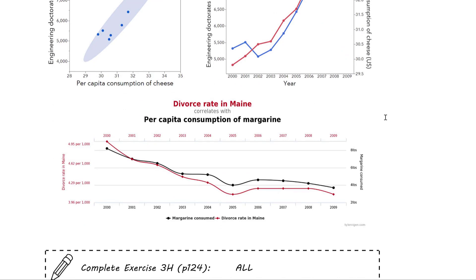A classic example often found when googling 'correlation versus causation' is the divorce rate in Maine versus per capita consumption of margarine. Both are decreasing over time, and they follow an alarmingly similar trend — as the divorce rate decreases, margarine consumption decreases in a very similar pattern. This is highly likely to be pure coincidence. It's hard to think of a third variable or confounding variable that would impact both divorce rates and margarine consumption, so we simply note the strong correlation without making any judgment about cause.